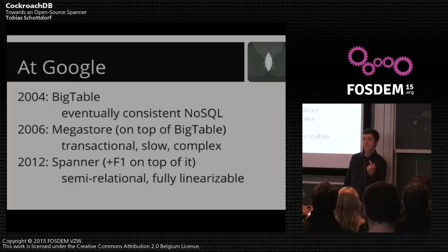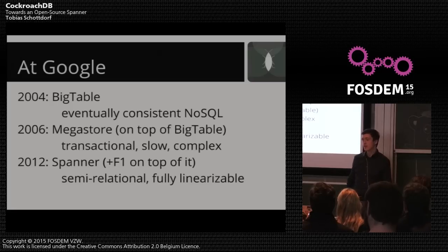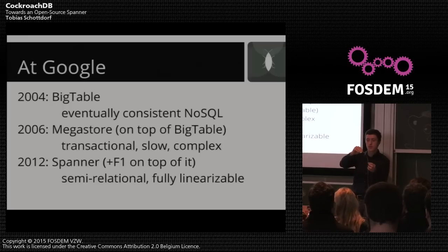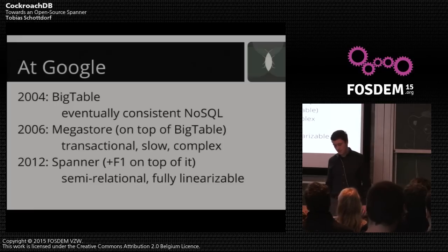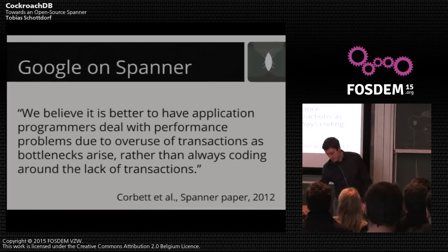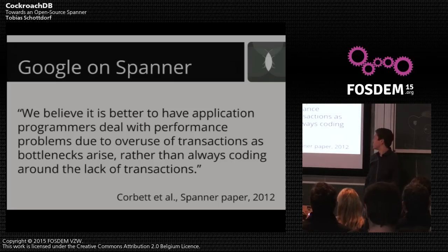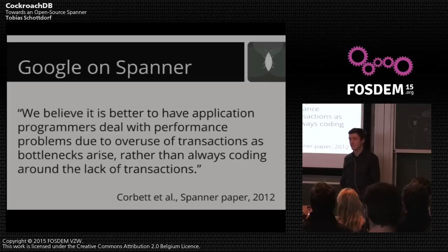It's cumbersome if each individual programmer has to think about issues that arise when data they wrote isn't there yet. So what Google did was put another layer on their NoSQL data store that emulated the consistency they needed — what I'd call a NoSQL-ish database. But it had downsides because the underlying data store wasn't designed for this, so it was fairly slow and complex. Then it took another six years for Google to come up with Spanner — a semi-relational, fully linearizable database that basically behaves like a single Postgres on your machine.